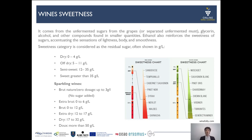Other compounds in smaller quantities like peptides can also cause sweetness sensation. Ethanol furthermore reinforces the sweetness of sugars, accentuating sensations of lightness, body, and smoothness. Sweetness categories are measured by residual sugar: 0–4 g/L is dry, 5–11 g/L is off-dry, 12–35 g/L is semi-sweet, and more than 35 g/L is considered sweet — at least for still wine.